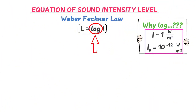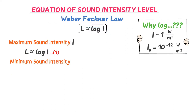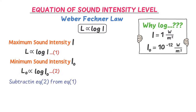Fechner used log base 10 in this equation to make it understandable and simple. The maximum sound intensity the human ear can detect is I. According to Weber-Fechner law, the loudness of this sound intensity is directly proportional to the log of the maximum sound intensity — call this equation 1. The minimum sound intensity the human ear can detect is I₀. According to Weber-Fechner law, the loudness of this sound is also directly proportional to the log of the minimum sound intensity — call this equation 2. The difference between maximum and minimum loudness is called sound intensity level.